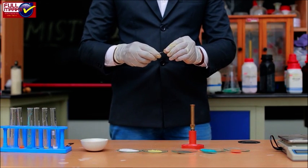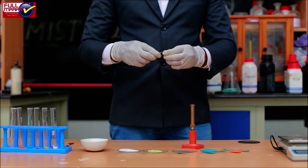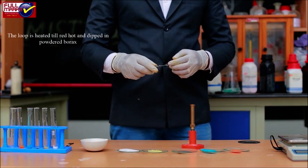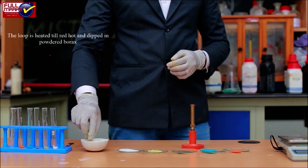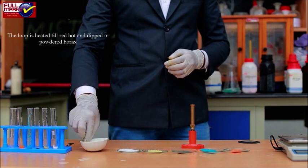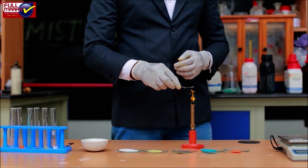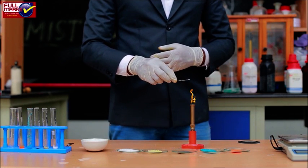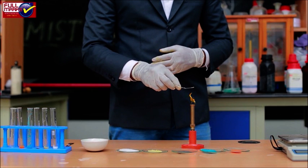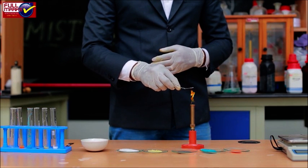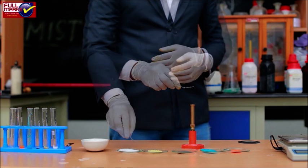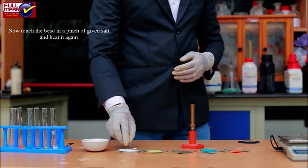Borax bead test procedure: A loop is made with platinum wire. The loop is heated till red hot and dipped in powdered borax and heated again. The borax swells up and gives a transparent bead. Repeat the process till you get a perfectly colorless bead. Now touch the bead to a pinch of given salt.